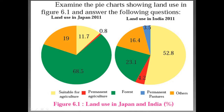This is figure 6.1 — land use in Japan and India. Different colors are used to show agricultural land, the forest, pastures, etc. You can study this figure and answer the questions below.